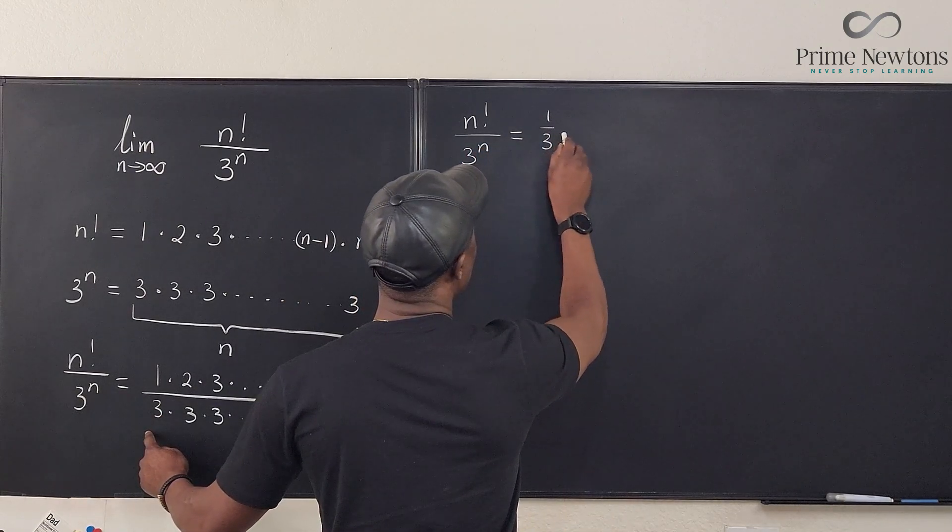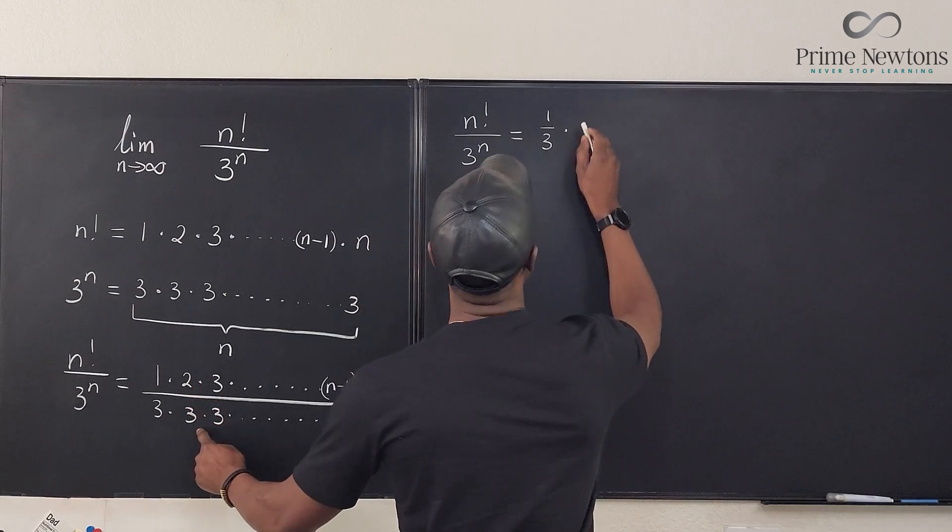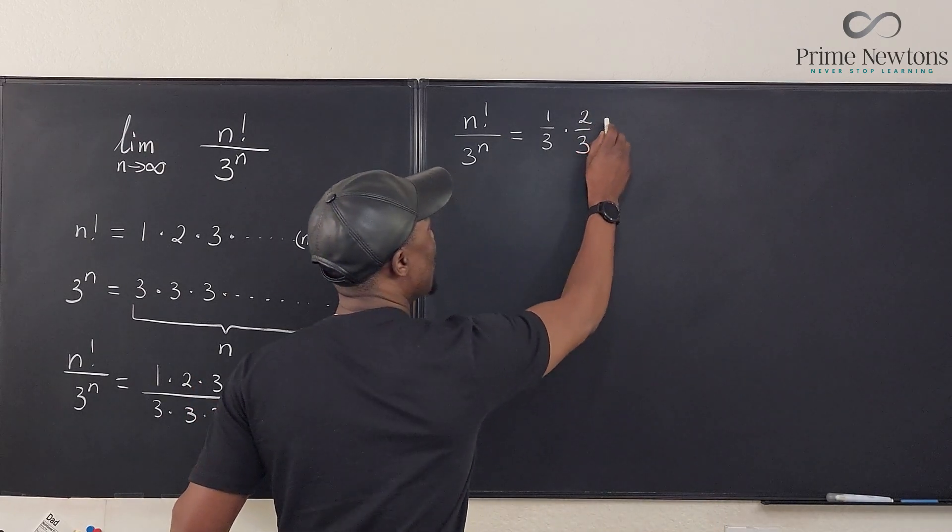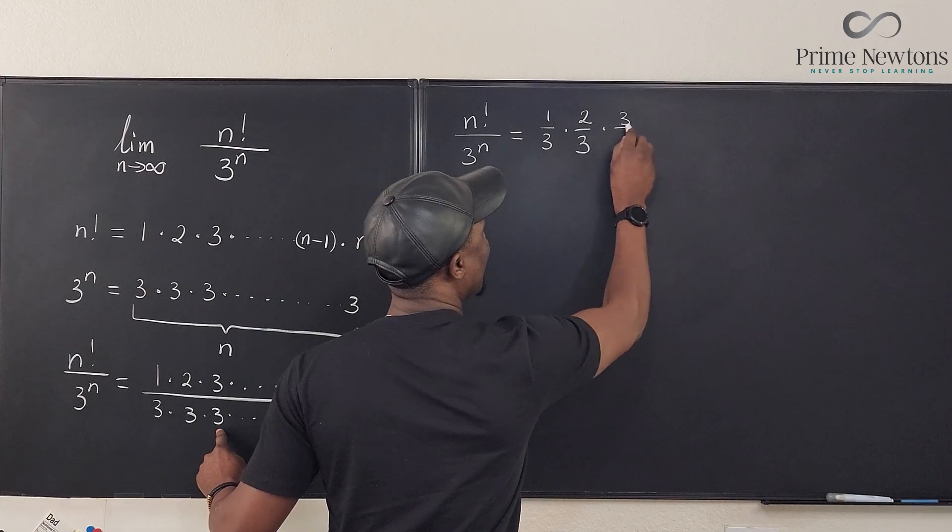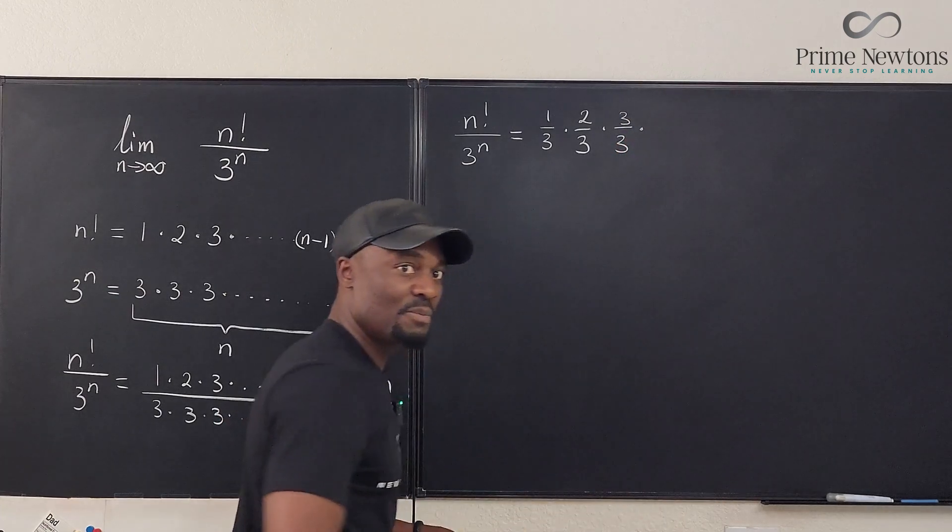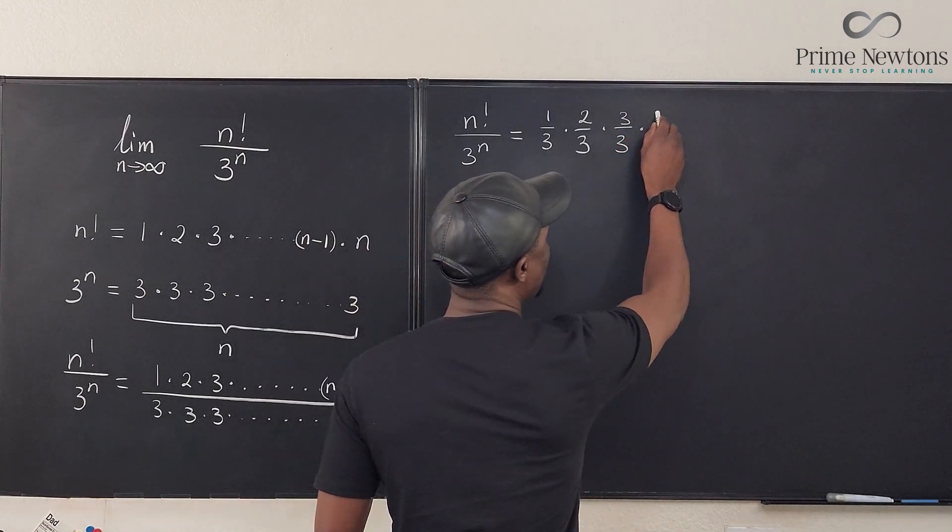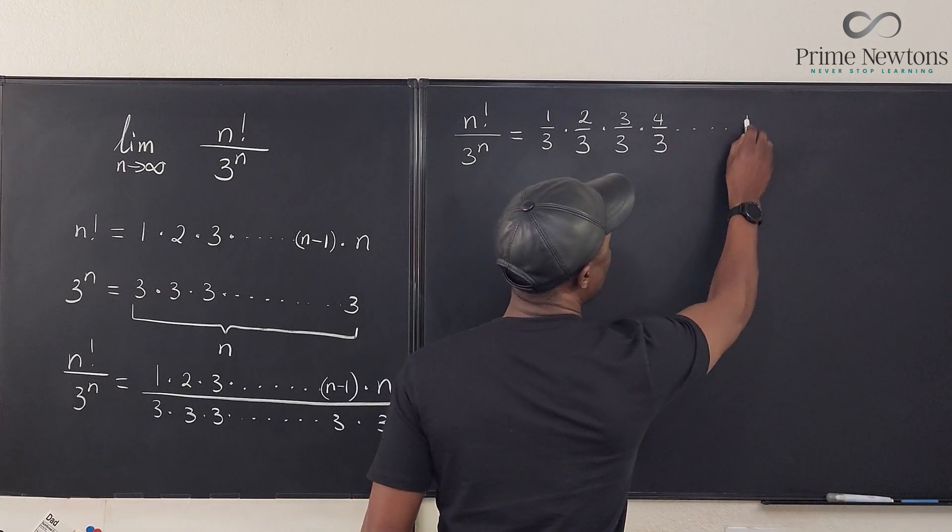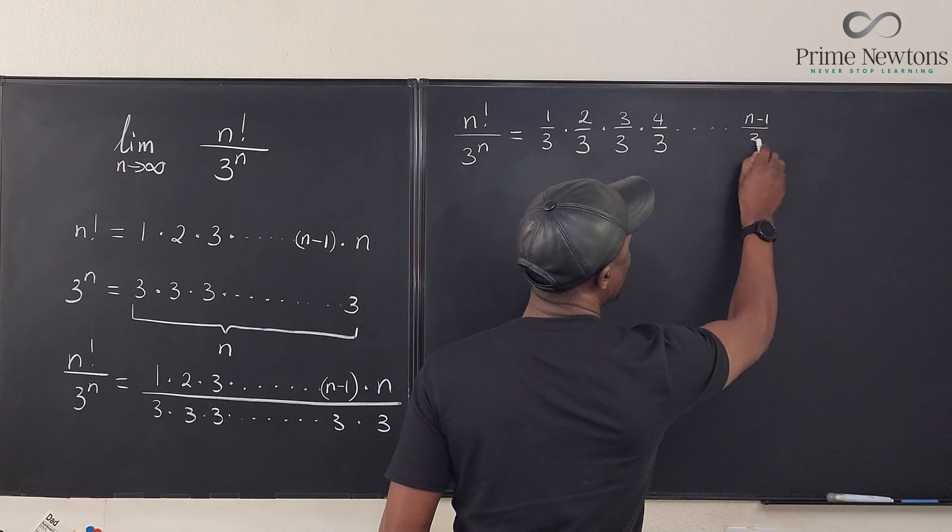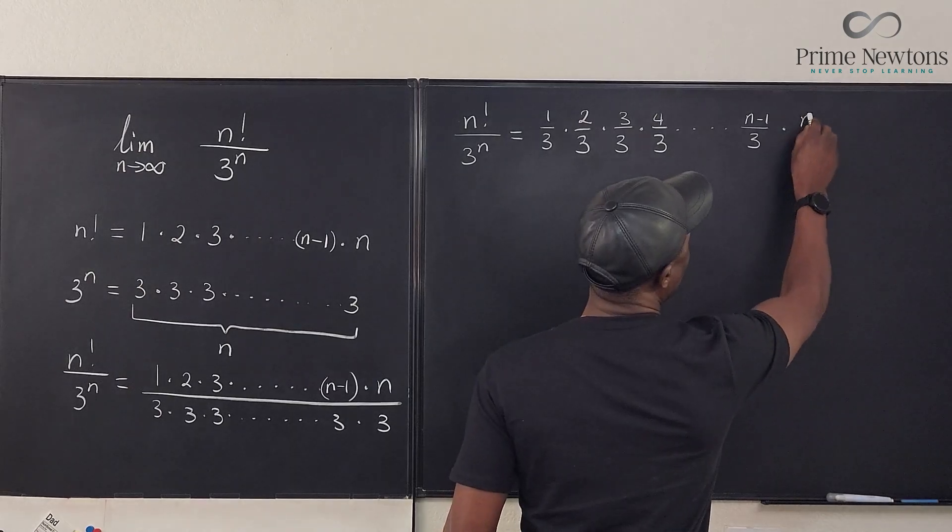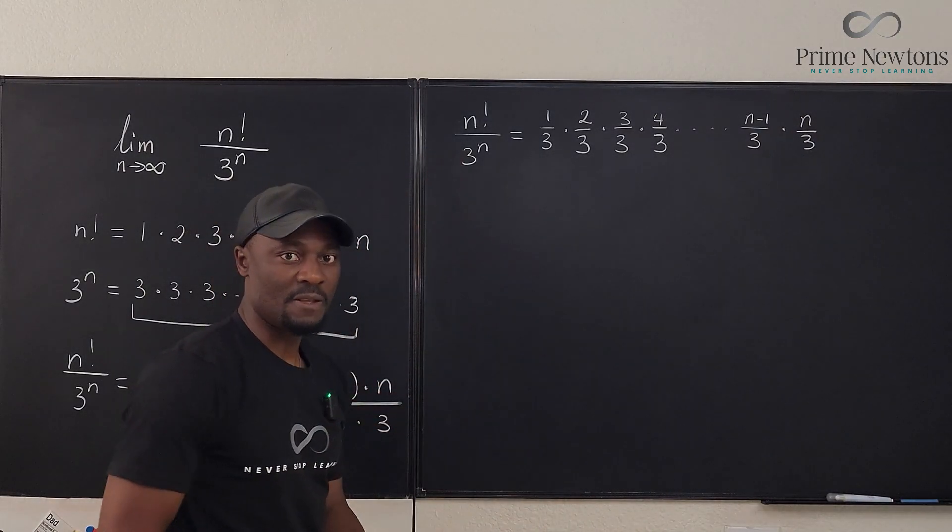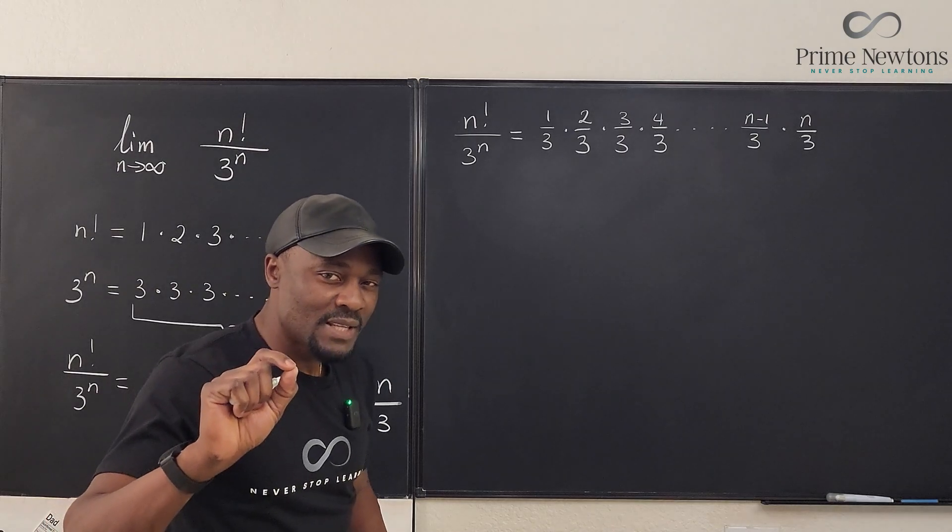So we can say that n factorial divided by 3 to the n is the same thing as 1 over 3 times 2 over 3 times 3 over 3, times there's going to be another number, 4 over 3. We're going to have n minus 1 over 3 times n over 3. That's what this is going to be.